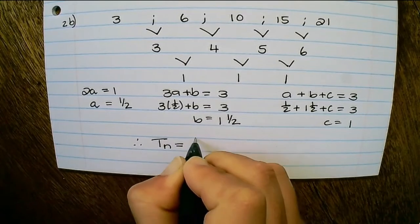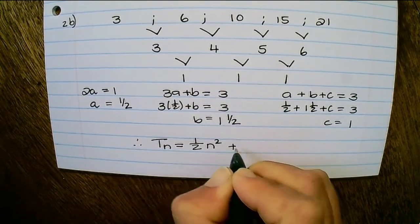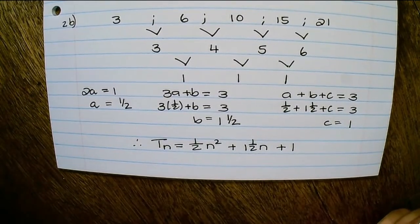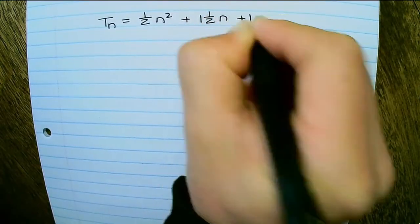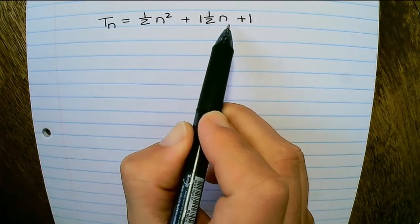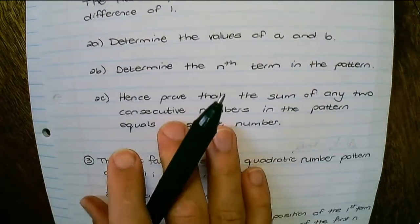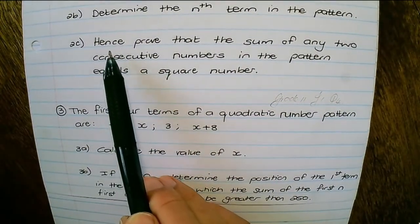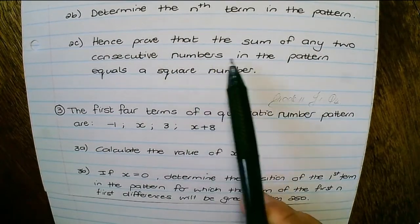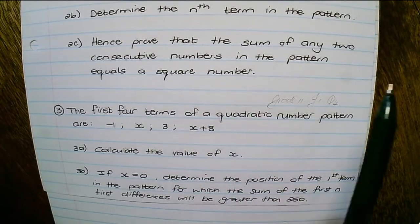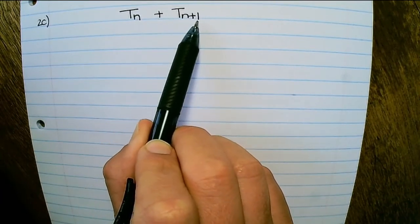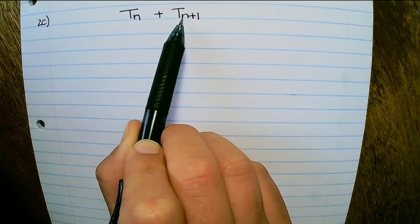Therefore Tₙ equals one half n squared plus one and a half n plus 1. Our next question is an interesting one: prove that the sum of any two consecutive terms in the pattern equals a square number. We need to prove that Tₙ plus Tₙ₊₁ is a perfect square.